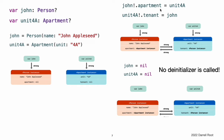You can now link the two instances together so that the person has an apartment and the apartment has a tenant. Note that the exclamation point is used to unwrap and access the instances stored inside the John and Unit4A optional variables so that the properties of those instances can be set. Unfortunately, linking these two instances creates a strong reference cycle between them. The Person instance now has a strong reference to the Apartment instance, and the Apartment instance has a strong reference to the Person instance. Therefore, when you break the strong references held by John and Unit4A variables, the reference counts do not drop to zero, and the instances are not deallocated by ARC. The strong reference cycle prevents Person and Apartment instances from ever being deallocated, causing a memory leak in your app.